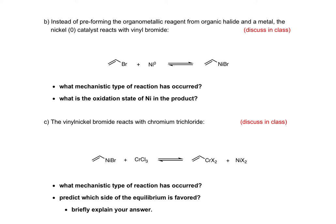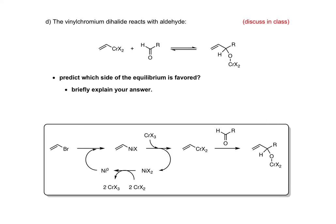Continuing down the worksheet to the last stage of the mechanism. As the organochromium dihalide is formed, it will react with the aldehyde to give a chromium alkoxide upon carbon-carbon bond formation. In class, we'll make a prediction regarding which side of the equilibrium is favored.